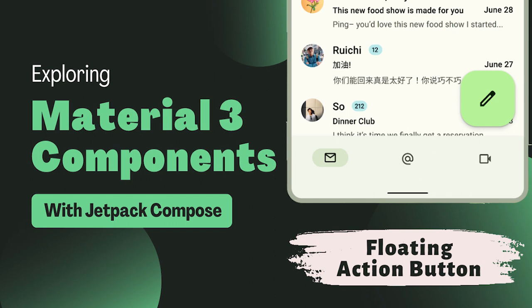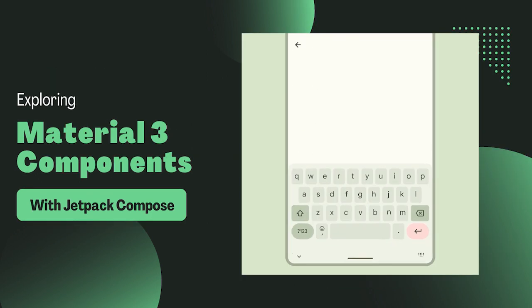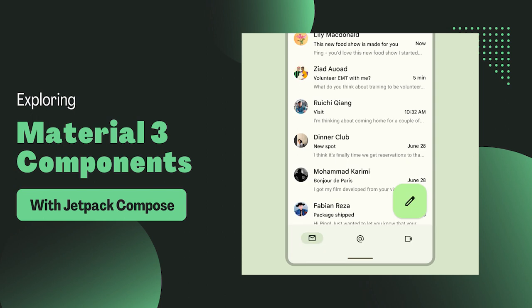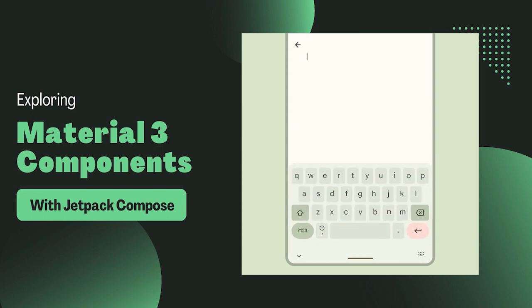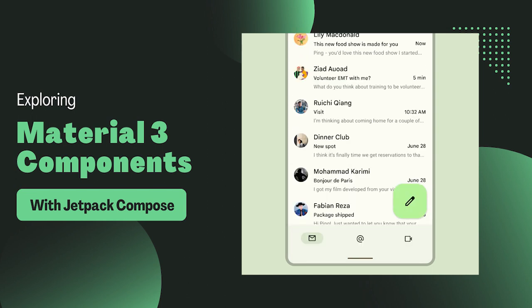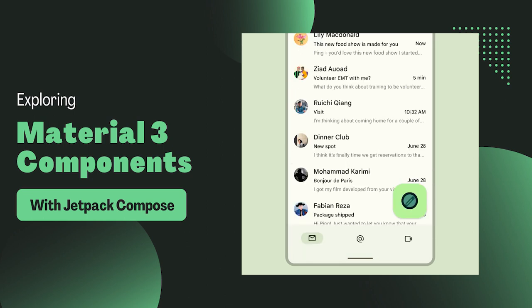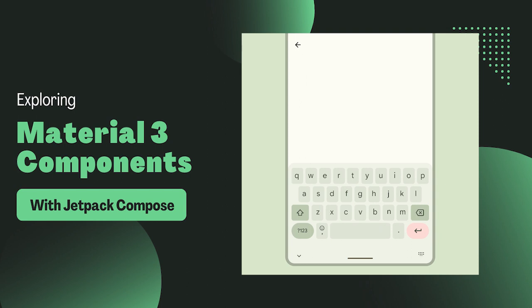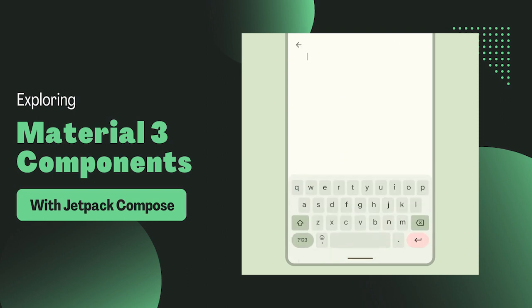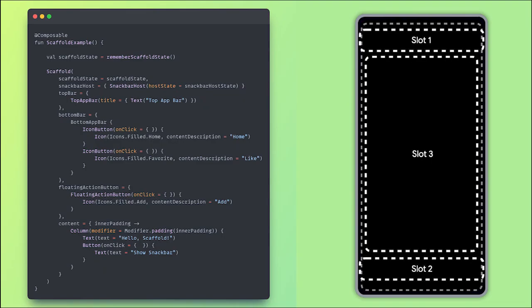Hello everyone, welcome back to our Material Design 3 series with Jetpack Compose. Today let's dive into the next component, the floating action button or FAB. The floating action button appears in front of all other content on screen and is recognizable for its rounded shape and icon in the center. FAB is used for representing a screen's primary action.